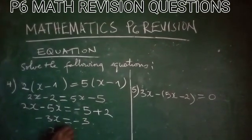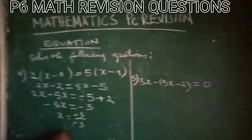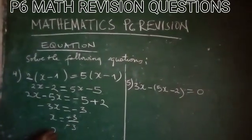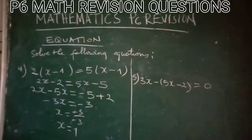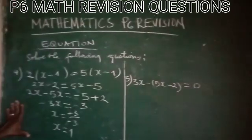Thus, x will be equal to negative 3 over negative 3. We simplify negative by negative 3. 3 divided by 3 is equal to 1. Thus, x is equal to 1. I think this question is very simple.